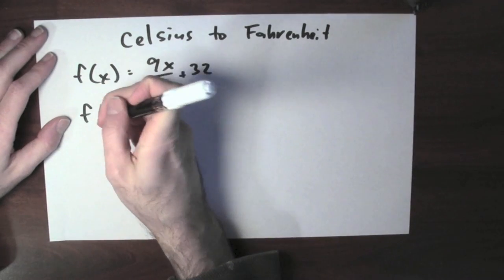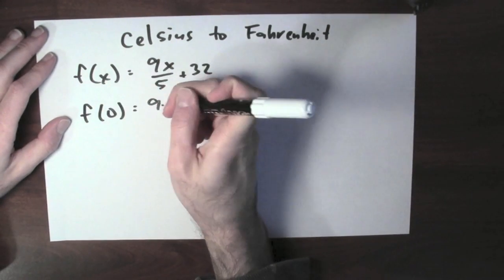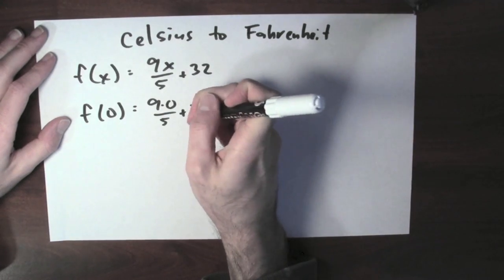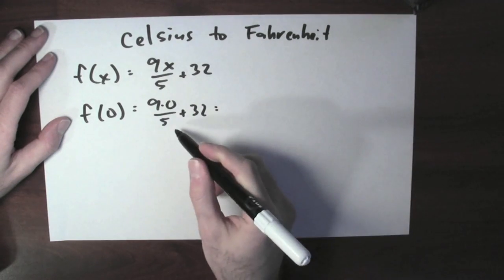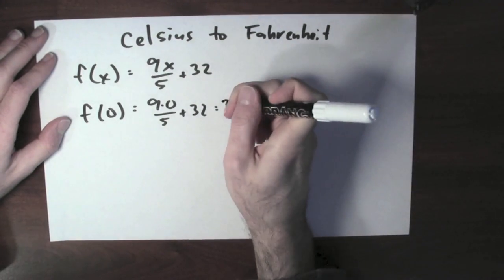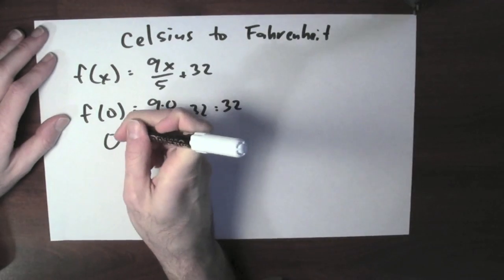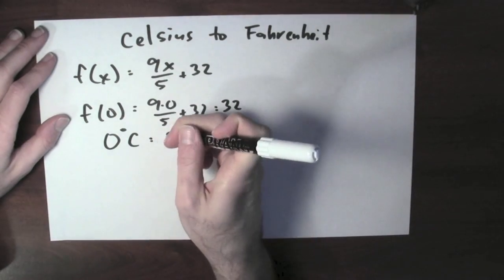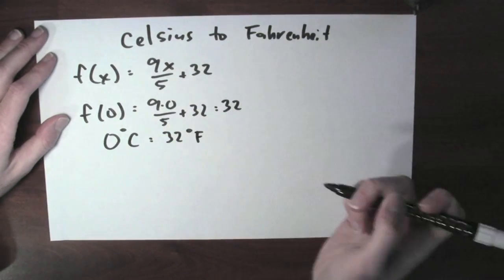Let's take a look. What's f of 0? That'd be 9 times 0 over 5 plus 32. Well, that's 0 plus 32, that's just 32. And of course, 0 degrees Celsius is the same thing as 32 degrees Fahrenheit.